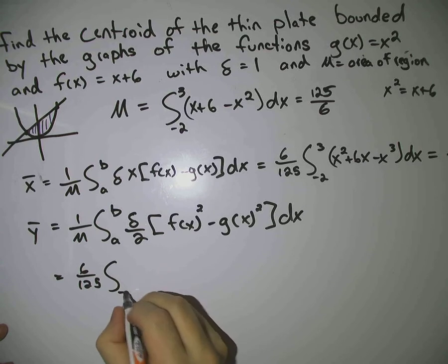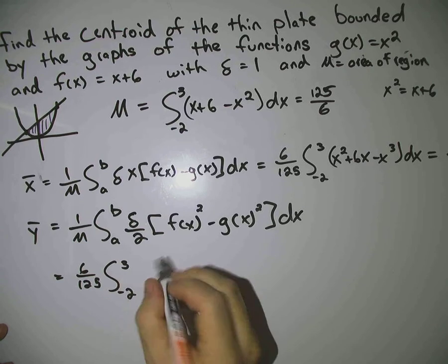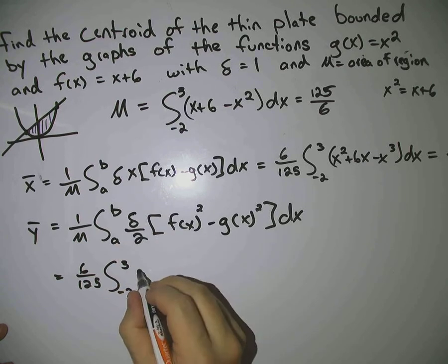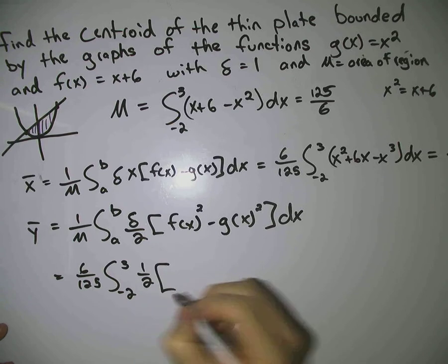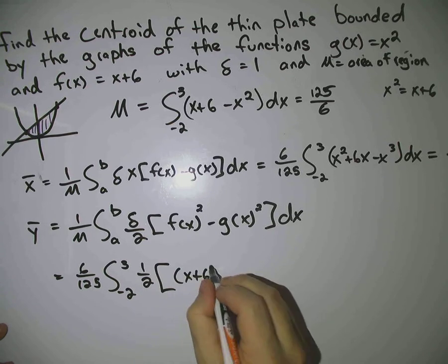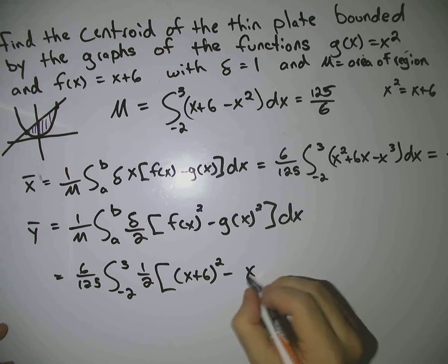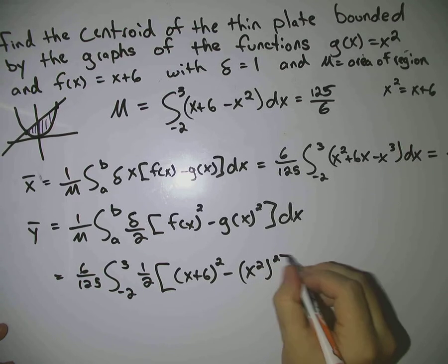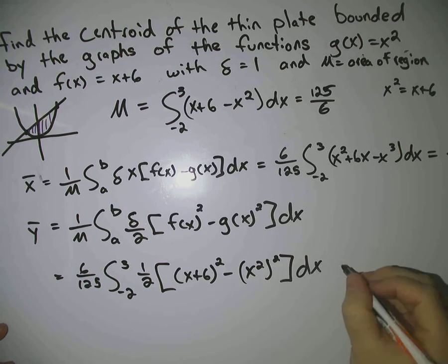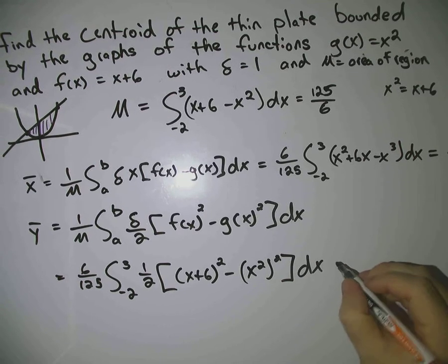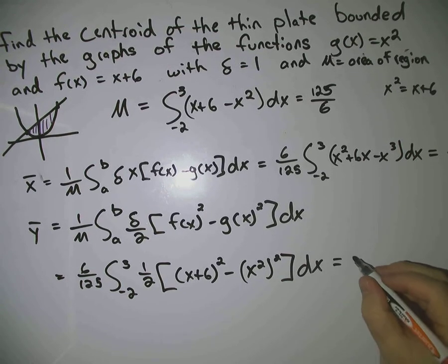Same limits, negative 2 to 3, sigma is 1, so it's 1 half. And then it's going to be x plus 6 squared minus x squared, squared dx. If you work that all out, you'll get an answer of 4.